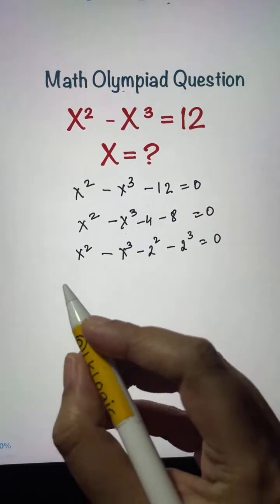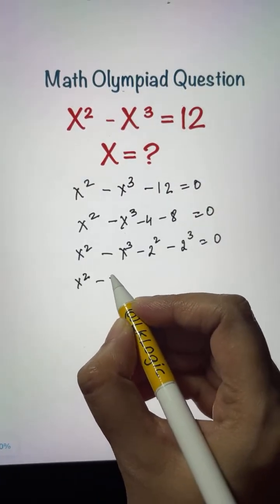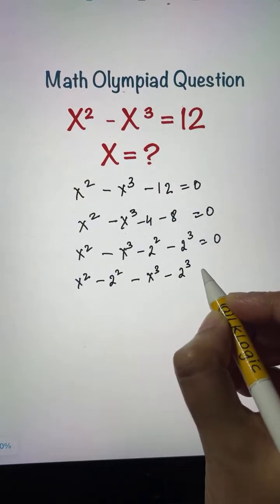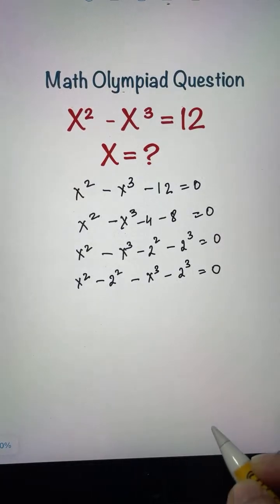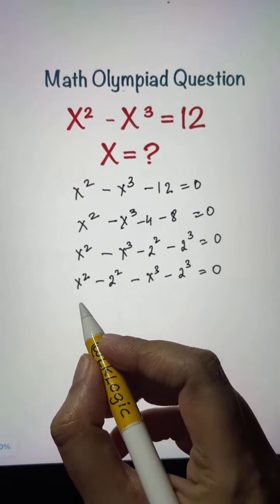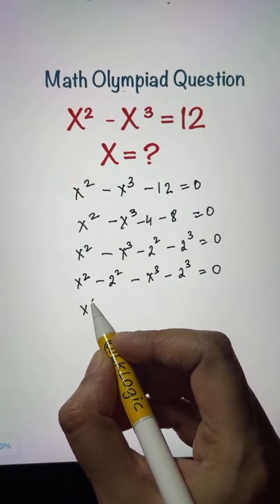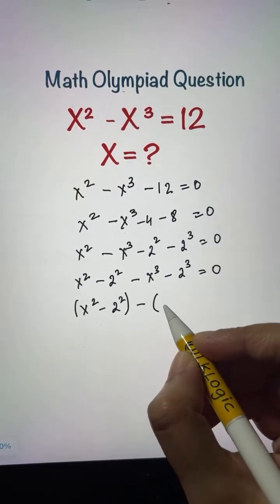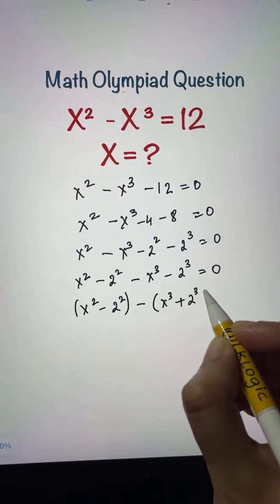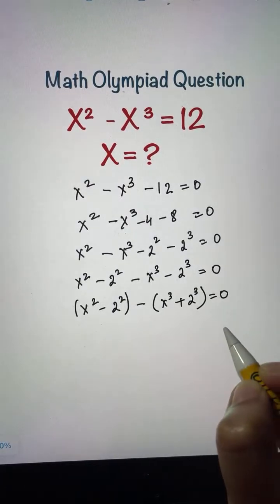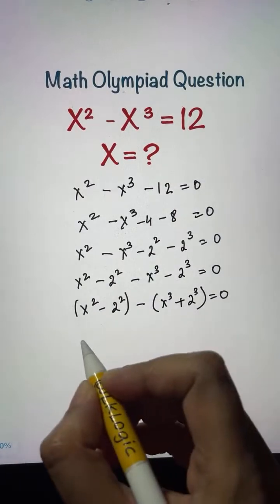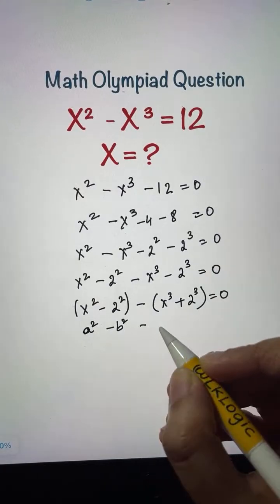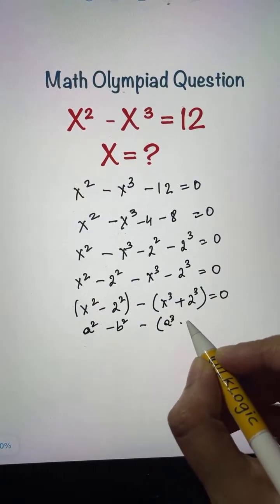Now let me pair them up. I'll have x squared minus 2 squared, then negative x cubed minus 2 cubed, equals 0. Taking the negative sign common from the second pair, I'm left with x squared minus 2 squared, minus the quantity x cubed plus 2 cubed, equals 0. This is in the form of a squared minus b squared, and a cubed plus b cubed.